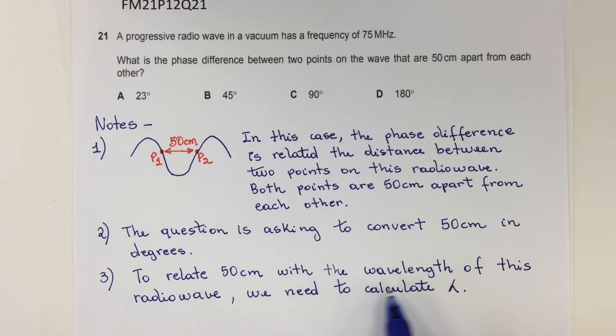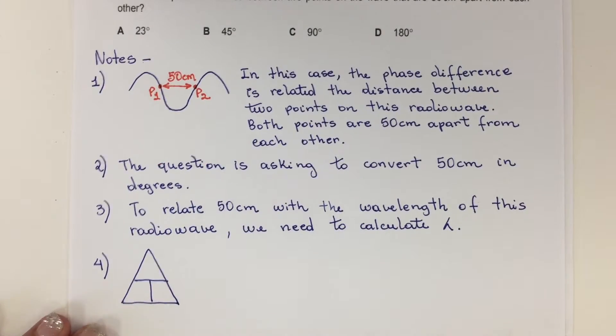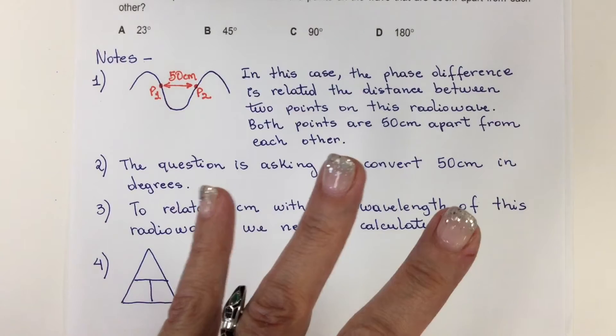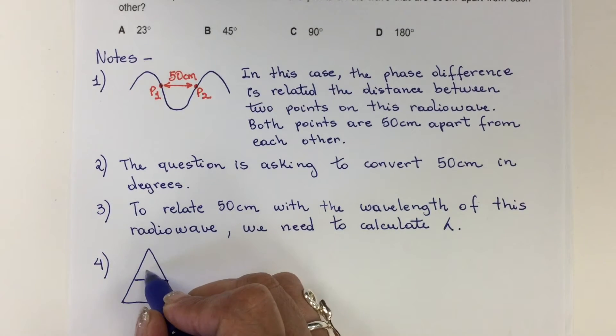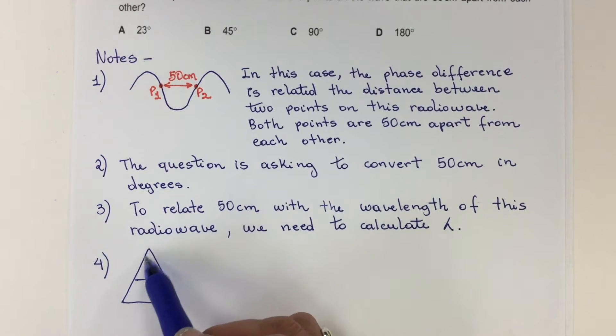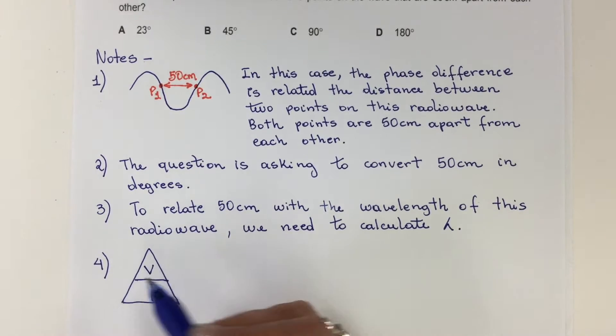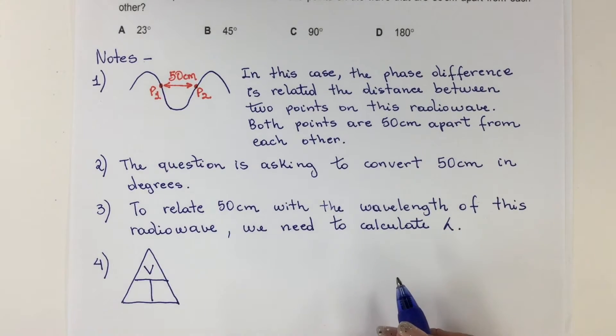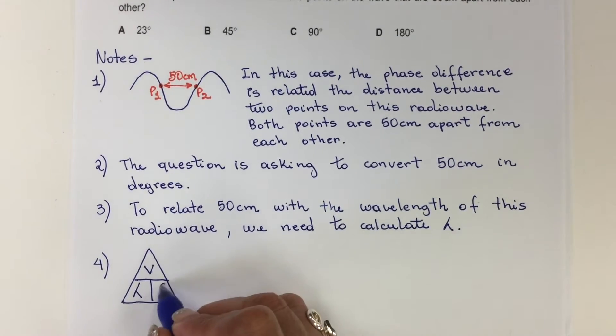To relate 50 centimeters with the wavelength of this radio wave, we need to calculate lambda. The wave equation has three variables: V is the speed of the wave, which goes on the top of this triangle because it looks like a V upside down. The other two variables are wavelength and frequency.